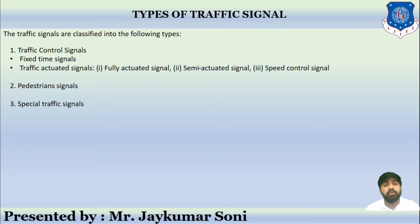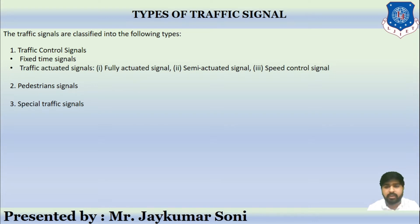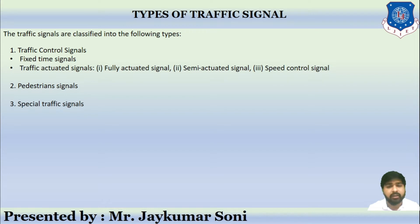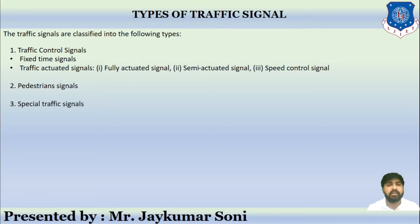There are total three categories. First is called traffic control signal, which can be divided into fixed, semi-actuated, and speed — total three types. Second is called pedestrian signal and third is called special traffic signal.